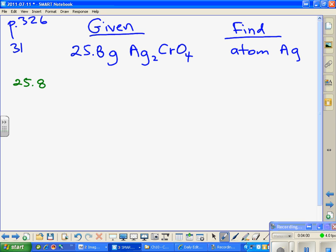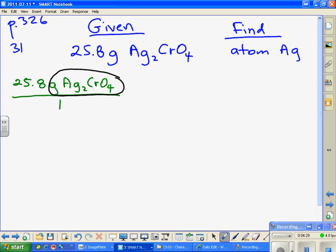Watch as we go through this and let's get our units of measure. Here's how we get started. All calculations start with given over one. So it's 25.8 grams of silver chromate. Folks, please start doing this. Circle the unit of measure and what the substance is, and duplicate that in your next fraction, because this has to cancel.